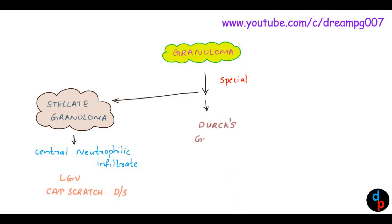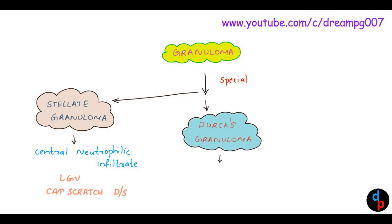Another special type of granuloma is Durk's granuloma, which is seen in cerebral malaria. The causative organism for cerebral malaria is Plasmodium falciparum.